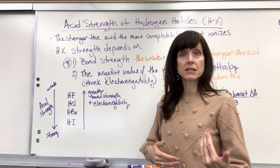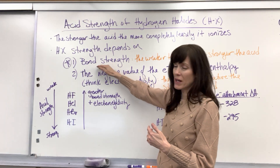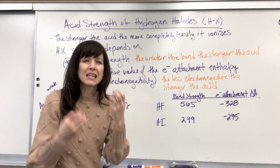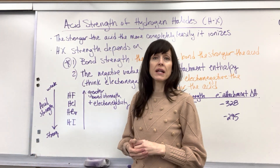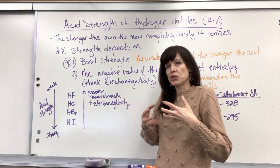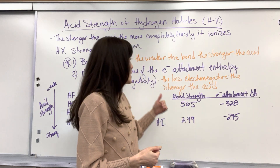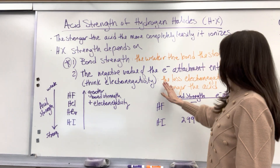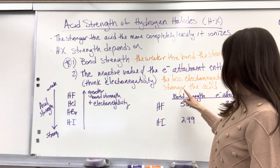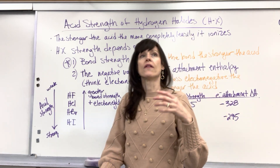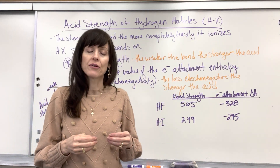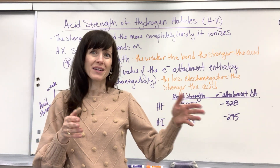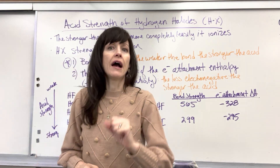The second thing — still a consideration, but not as heavily weighted as bond strength — is the negative value of the electron attachment enthalpy. Think in your head: electronegativity. Fluorine has the greatest electronegativity, the greatest ability to attract electrons to itself. And here's your takeaway: the less electronegative, the stronger the acid. The less ability a halogen has to attract electrons to itself, the easier it's going to be to break apart into the hydrogen ion and that halide ion.